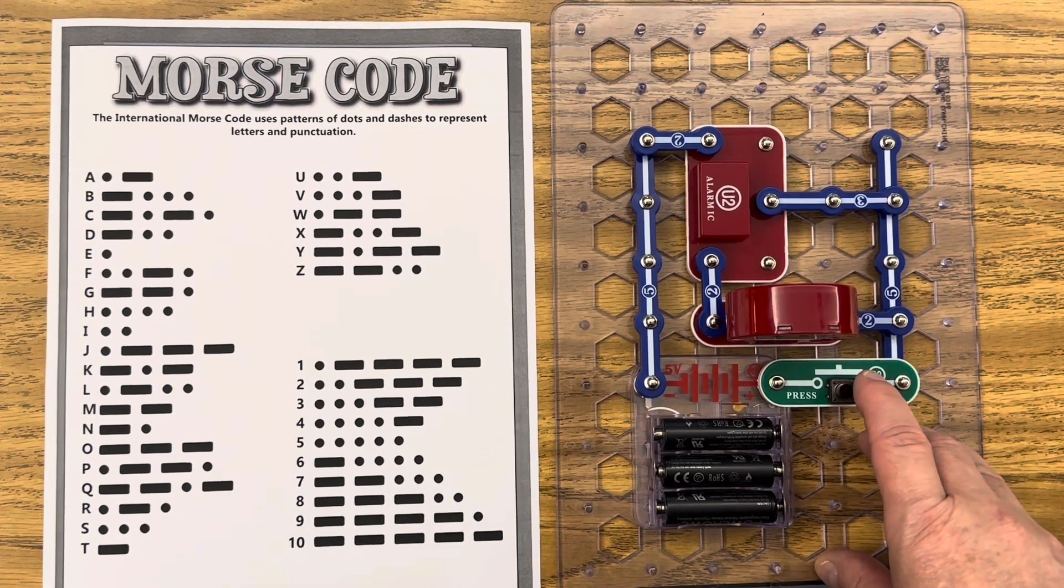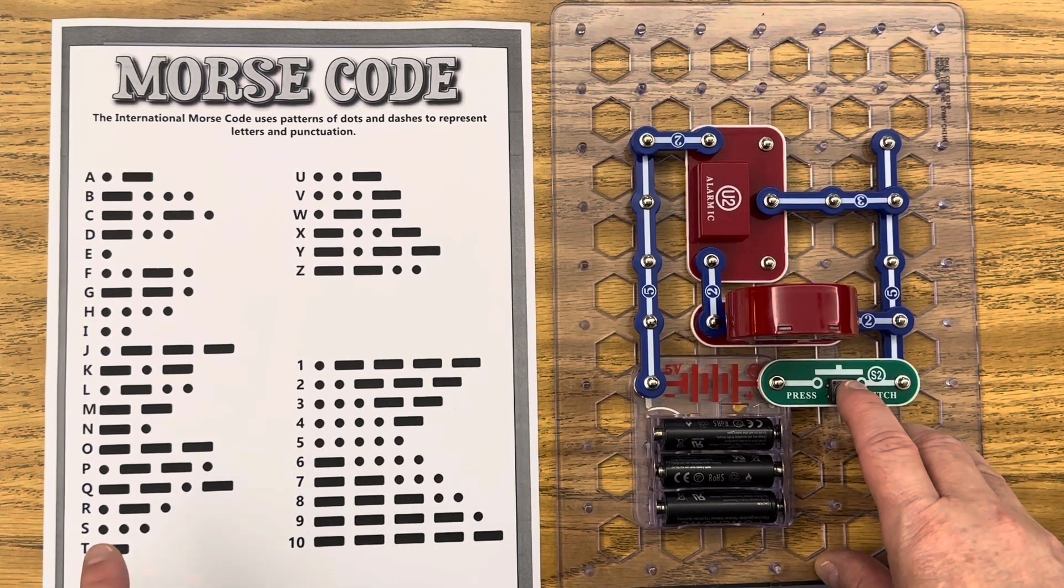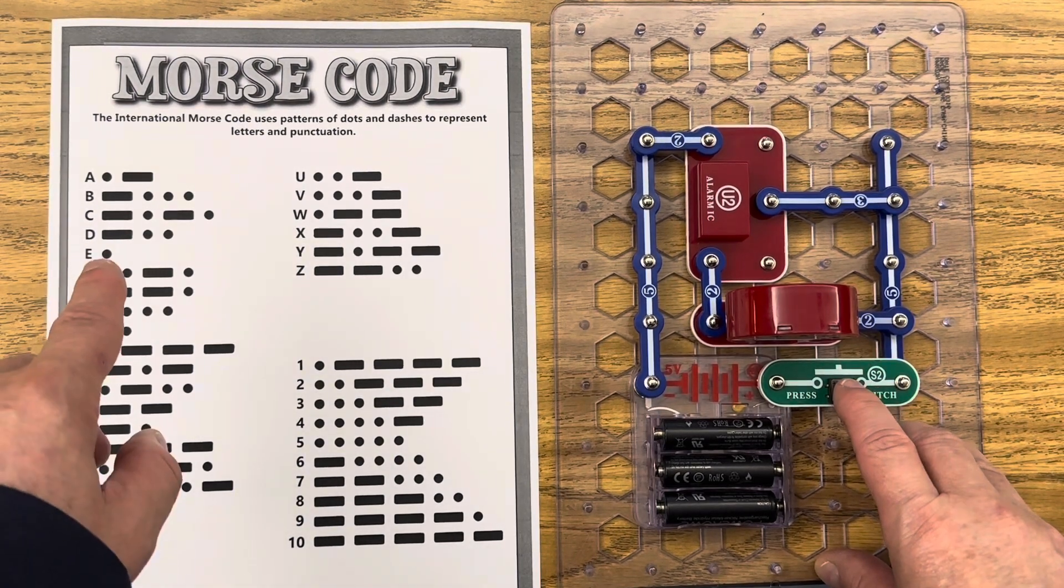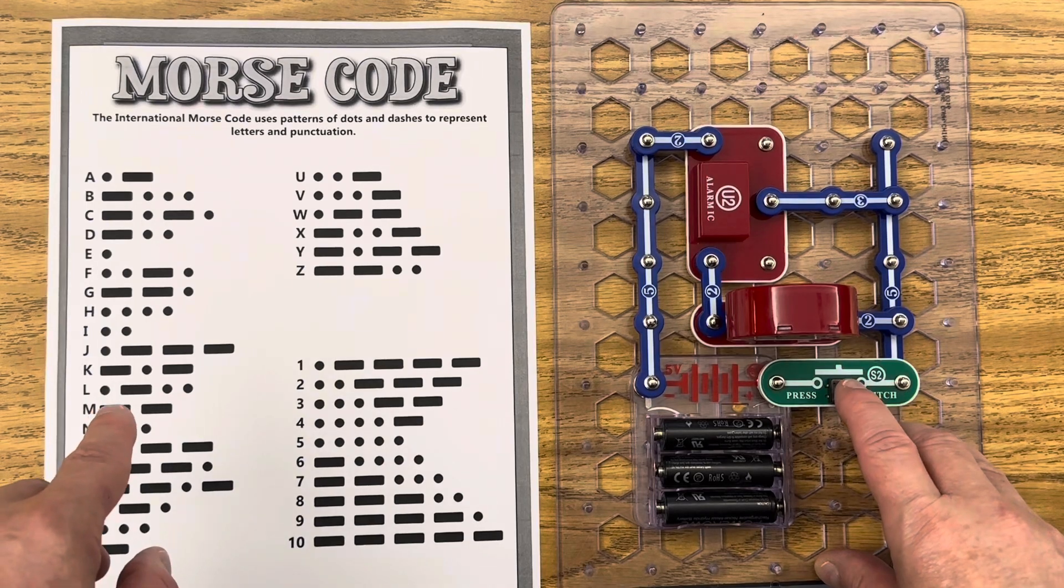Now let's say I wanted to spell a word. Let's spell STEM. Here's the letter S. Here's the letter T. Here's the letter E. Here's the letter M.